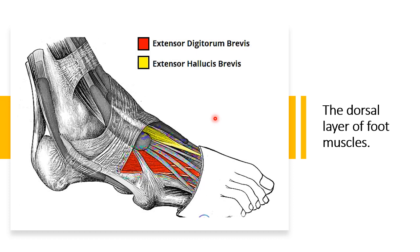The intrinsic muscles of the foot can be divided based on their situation. On the dorsal aspect, many of the extrinsic muscles attach to the dorsal surface. There are only two intrinsic muscles in the dorsal aspect: extensor digitorum brevis and extensor hallucis brevis. They are mainly responsible for assisting some of the extrinsic muscles in their action.